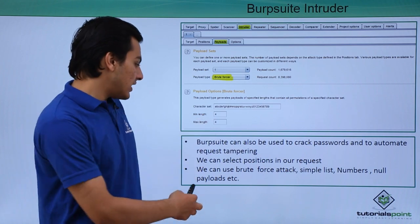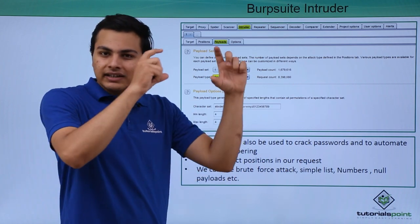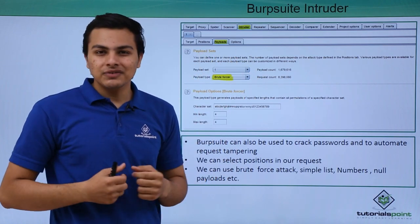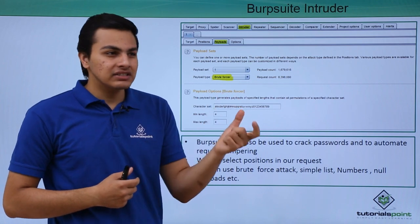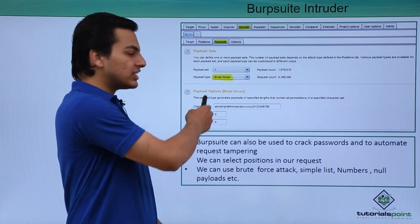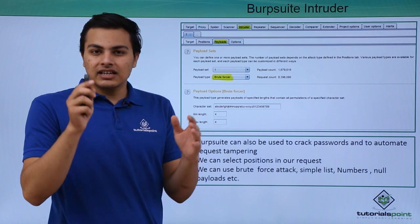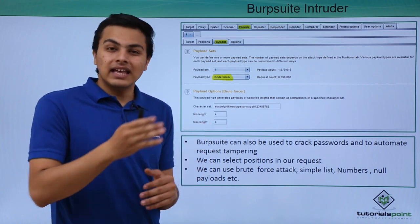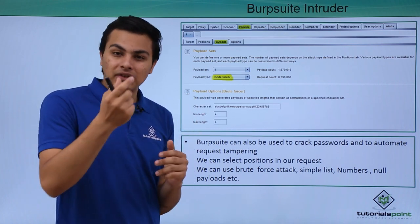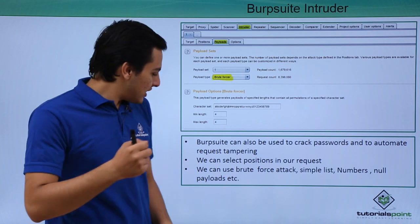We can select positions in our request — let's say there is a GET or POST request sending an email and password. We can select those positions, like email and password, then select a payload such as brute force with numbers, and click attack. Burp Suite will then send multiple requests to the web application with the email and password parameters changed in each request.